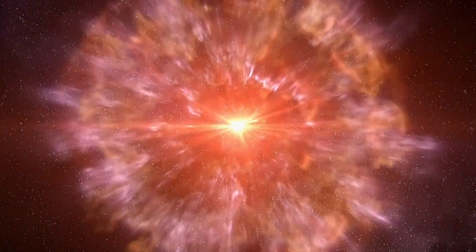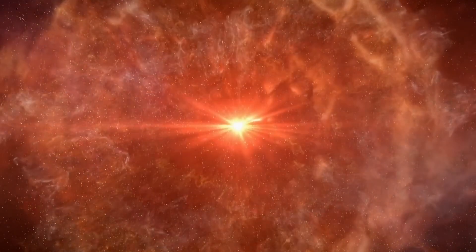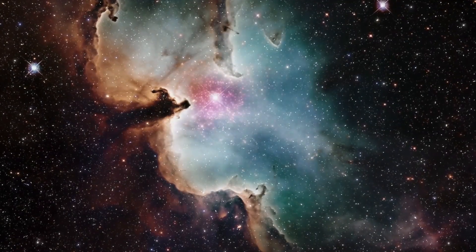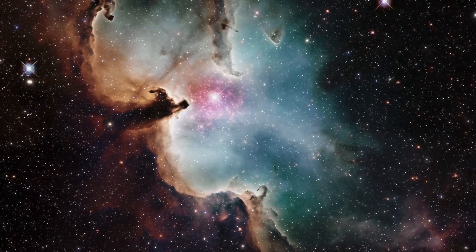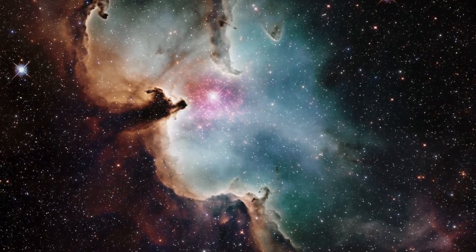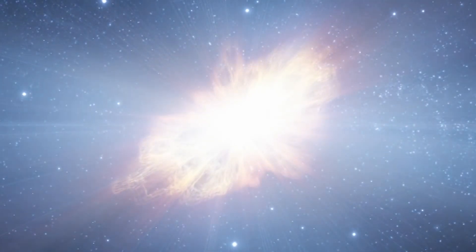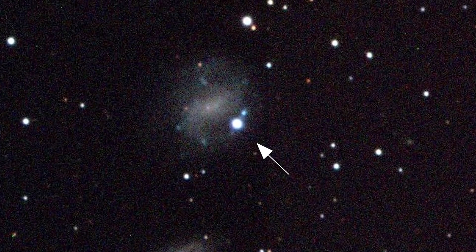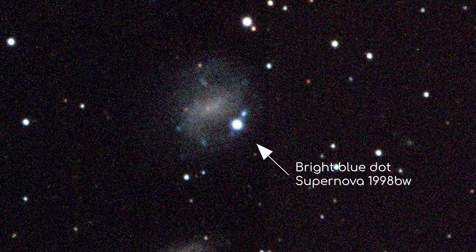Recent data points to another interesting twist. Betelgeuse has been losing mass at an unprecedented rate. What we're witnessing is a celestial striptease of sorts, as the star sheds layers of dust and gas, suggesting a rapid depletion of fuel. Is this shedding a prelude to the anticipated supernova event? And does this mean our countdown to the celestial spectacle is shorter than we initially estimated?